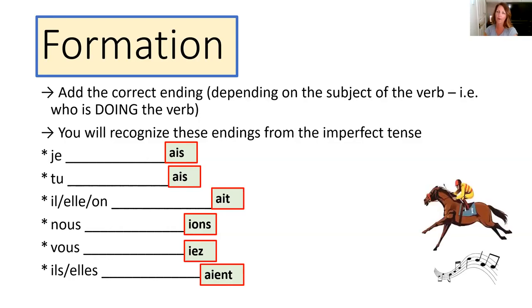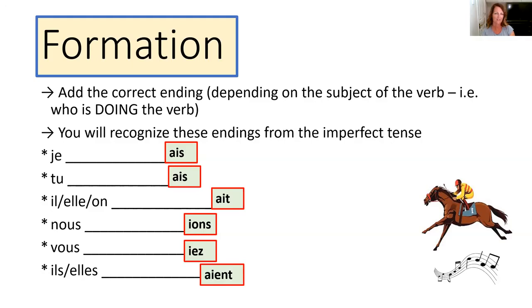If you've been in my class, we all sing a little song to help remember this one. It goes to the tune of the classical music that often accompanies horse riding: AIS, AIS, AITT, IONS, IEZ, AIENT. Sing it over and over again and that will stick in your head.